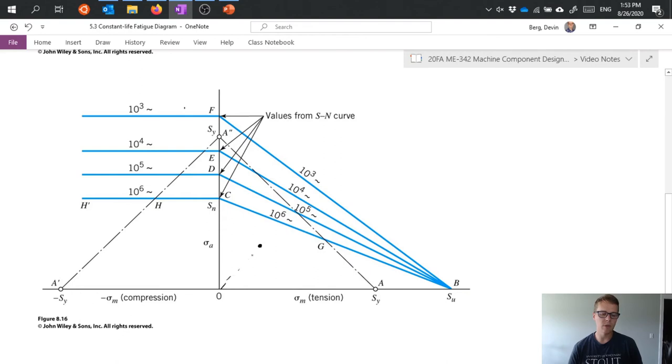Now a kind of interesting thing is I can, if I were to dash in a line through that point from the origin, I could actually use this line as sort of a calculation of my safety factor. My safety factor is really a metric that says how close am I to failure.